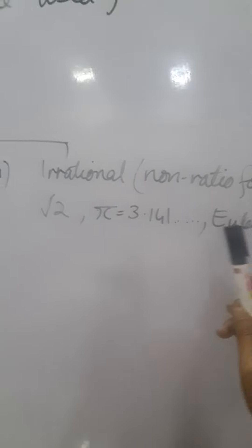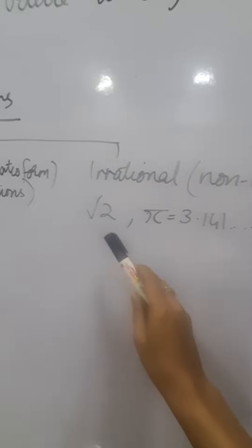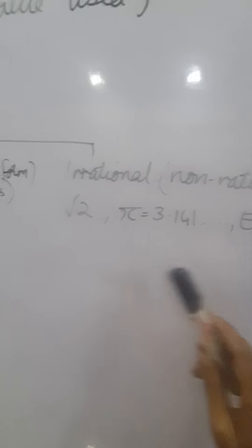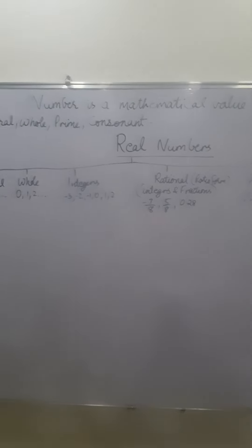Then irrational numbers which are non-ratio form numbers. For example, square root 2, pi, Euler's number. So this is the basic understanding of how numbers are classified.